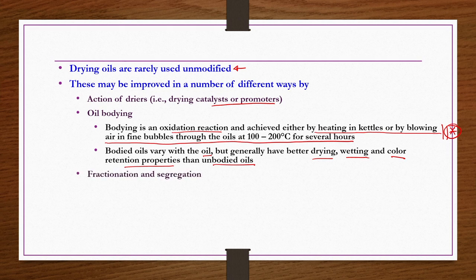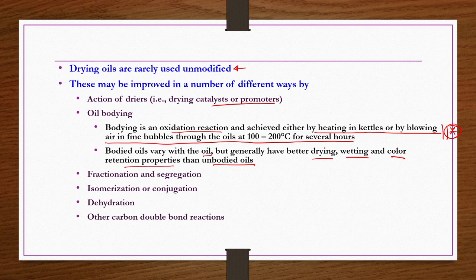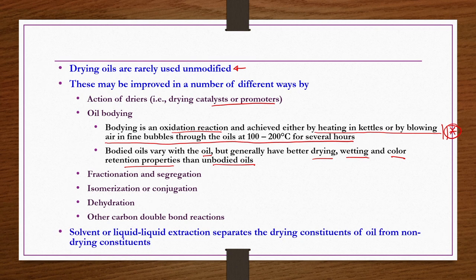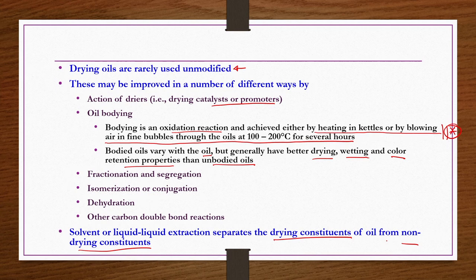Drying oils are rarely used unmodified. They are modified by pre-treatments such as oil bodying — an oxidation reaction achieved by heating in a kettle or blowing air in fine bubbles through the oils at 100 to 200 degrees centigrade for several hours. Bodied oils generally have better drying, wetting, and color retention properties than unbodied oils. Other pre-treatment methods include fractionation, isomerization or conjugation, dehydration, and other carbon double bond reactions.